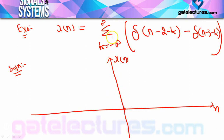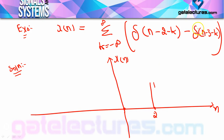If k = -1 to +1 doesn't help me understand whether the signal is periodic or not, I will draw from -2 to +2, or -3 to +3, and keep extending. So first, let's look at the summation for k = 0. For k = 0, note that n is not 0 — k is 0. You are plotting x[n] vs n. For k = 0, the result is: delta[n-2] minus delta[n-3], meaning one impulse at n=2 with amplitude +1, and one impulse at n=3 with amplitude -1.